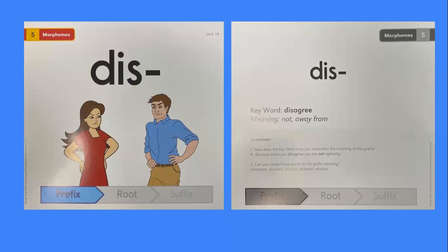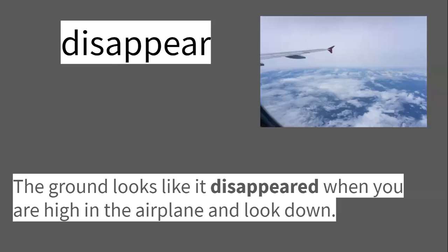Some words that start with dis are dishonest, disabled, distrust, disbelief, distract.